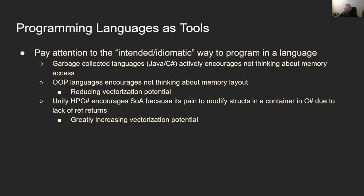Vectorization is essentially your computer's ability to do multiple instructions in one: for example, if you have eight floats and want to add four of them together with the other four, you can either do four separate operations, or if you think about your memory layout, you can do that as one operation using specialized hardware on the CPU. Your compiler can also do this for you if you think about memory layout upfront. I work a lot with Unity's new high-performance C# dialect — it strips away essentially all of C# until you're left with basically C.